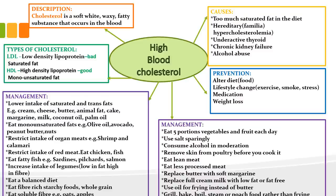Cholesterol can also be broken into two types. The bad one is low-density lipoproteins (LDL), which comes from saturated fats and animal fats. The good one is high-density lipoproteins (HDL), which comes from monounsaturated fats. Interestingly, when you eat a diet high in HDL fats, they can actually counteract and get rid of the bad LDL cholesterol — you can fight bad fat with good fat.